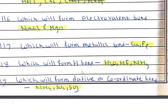Copper, iron, and other metals are examples of metallic bonds. Water, HF, and NH3 form hydrogen bonds because oxygen, fluorine, and nitrogen are each bonded to hydrogen. NH3, SO2, and SO3 form dative or coordinate bonds.